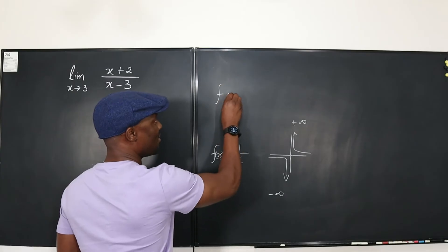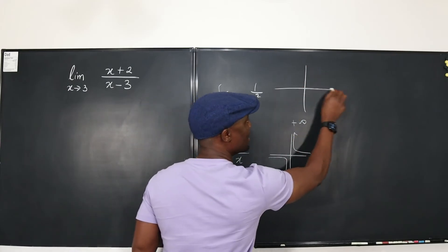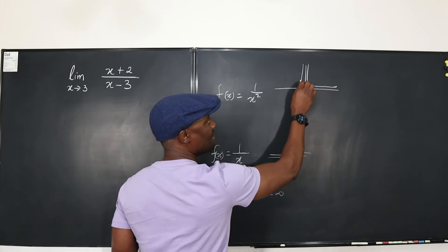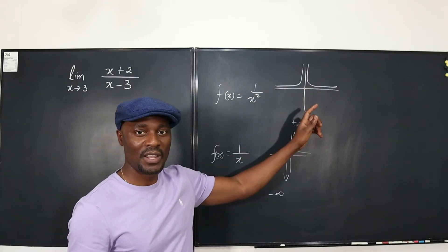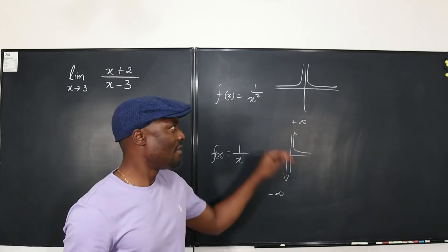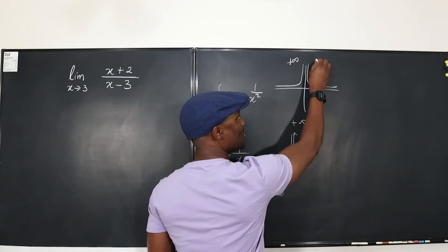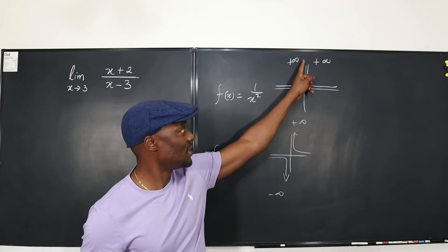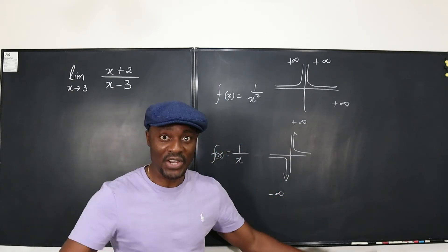However, look at this graph — the graph of f(x) = 1 over x squared. When you plot this graph, from the right it looks like that, and from the left it looks like this. So if I ask you, at the point where x equals 0, what would be the limit of this function? From the left direction it's going to positive infinity, and from the right direction it's also going to positive infinity. So the limit of this function as x approaches 0 is going to be positive infinity.